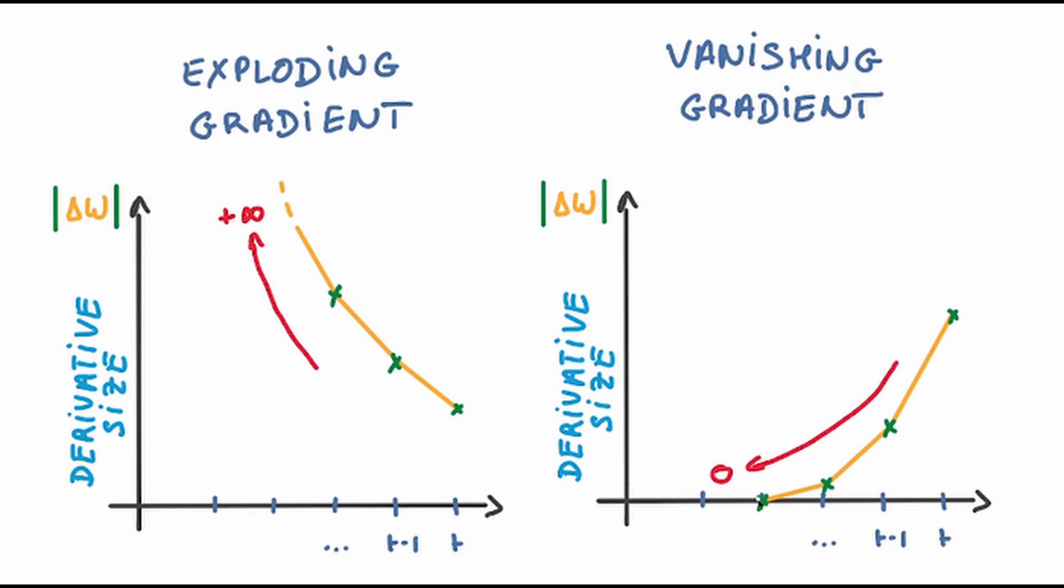RNNs, that is recurrent neural networks, inherently process sequences in a step-by-step manner. This means that to relay information from an early token to a later position, the information must be propagated through every intermediate step. This can potentially lead to vanishing or even exploding gradients, especially for long sequences, as the gradient signal might diminish or explode as it's back-propagated through time.